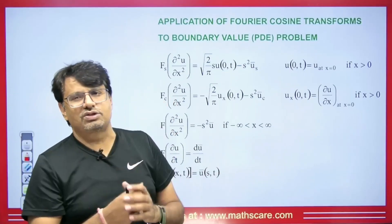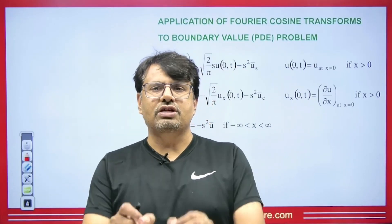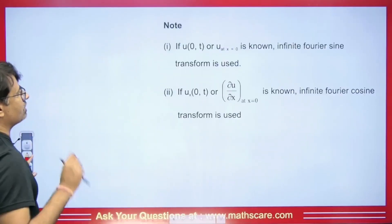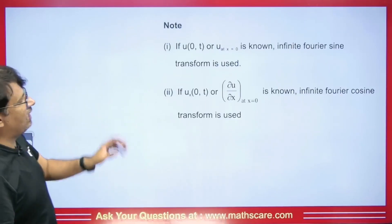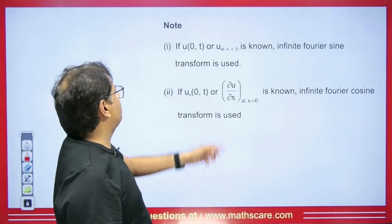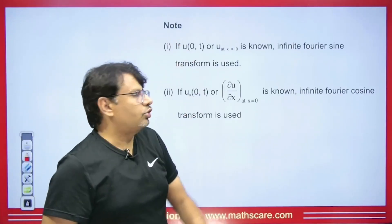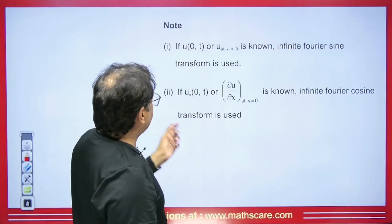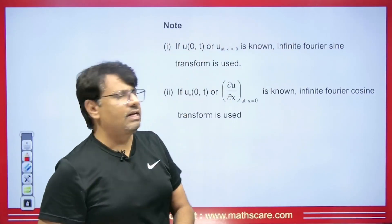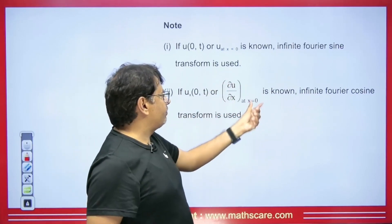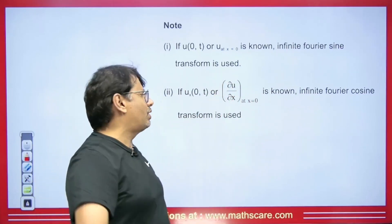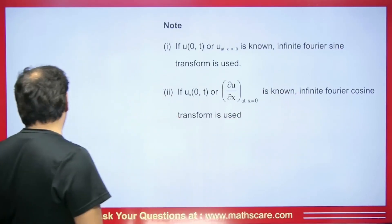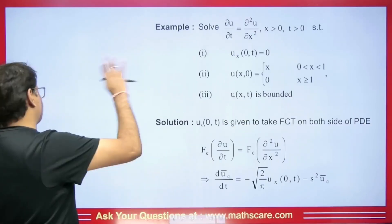Things will become clearer through practice questions. To recap: if in any question u(0,t) is given, we use the Fourier sine transform. If u_x(0,t) is given — that is del u by del x at x equal to 0 — then we use the Fourier cosine transform, also called the infinite cosine transform. The conditions in the question tell us which transform to apply.